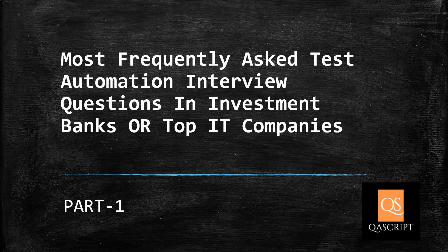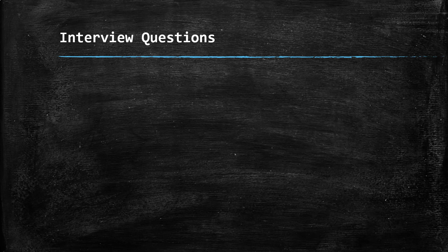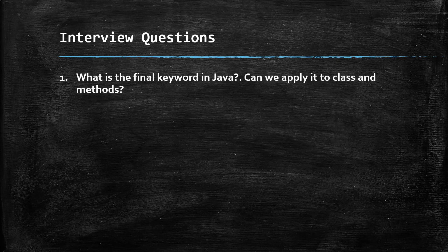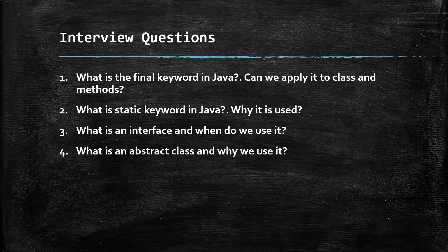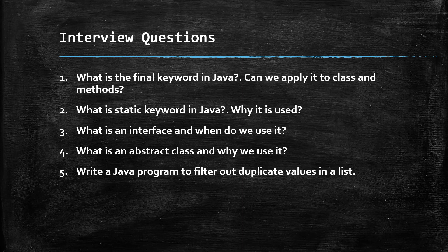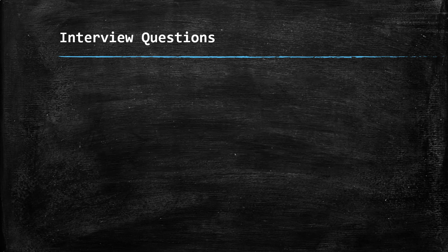We'll go through some very frequently asked Java interview questions, automation framework related questions, and programming questions asked in these interviews. The questions we'll discuss include: what is the final keyword in Java and can we apply it to classes and methods; what is the static keyword in Java and why it is used; what is an interface and when do we use it; what is an abstract class and why we use it; and write a Java program to filter out duplicate values in a list.